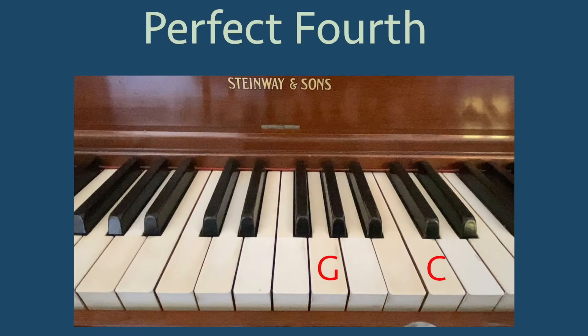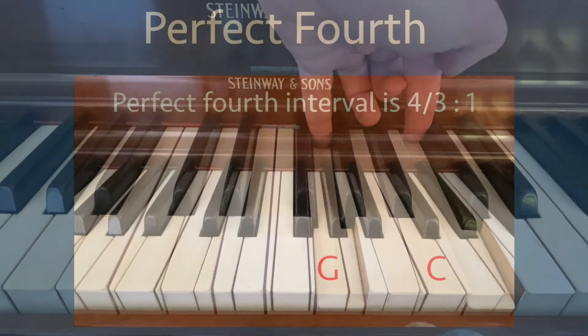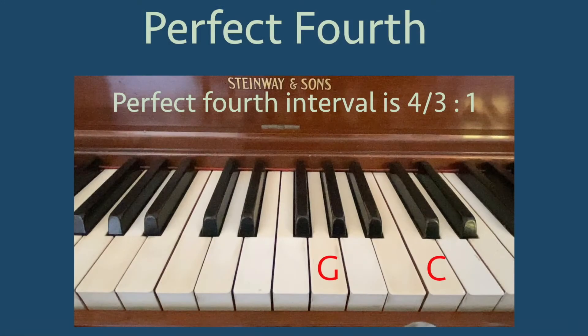And we have another interval we can describe, called the perfect 4th from G to the octave above C. The ratio for this interval is 2 to 3 halves, or simply 4 thirds to 1. We can use this to identify the perfect 4th for our fundamental C, which is the note F.